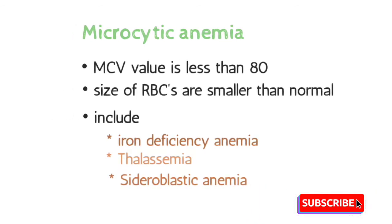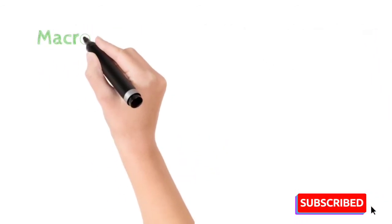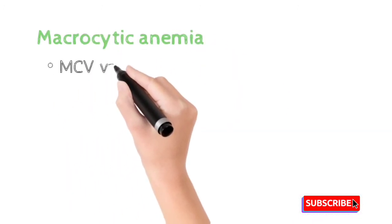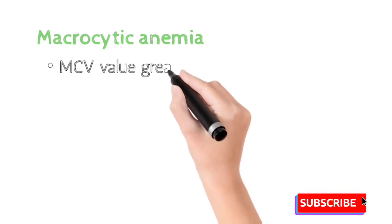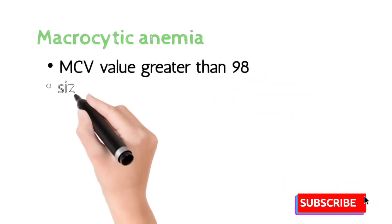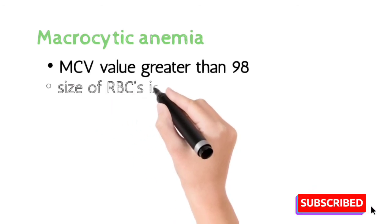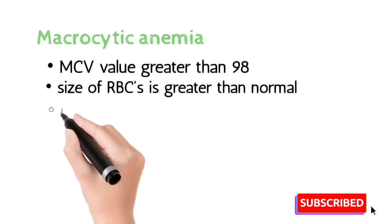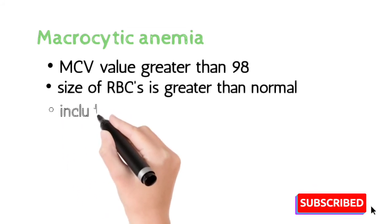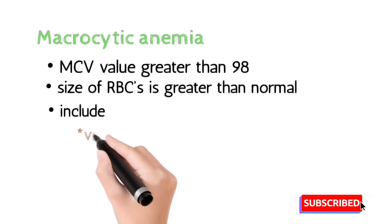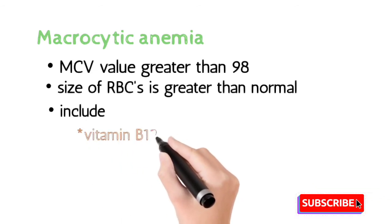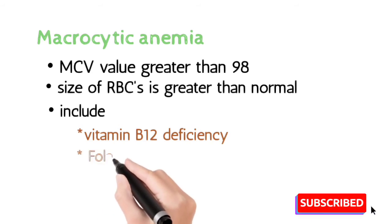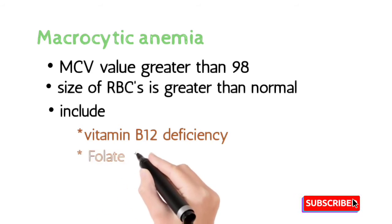Macrocytic anemia is the condition during which the size of RBCs is larger than normal and the MCV value is greater than 98. This includes the megaloblastic type. Conditions included are vitamin B12 deficiency anemia — that is, pernicious anemia — and folic acid deficiency anemia, during which the size of RBCs is also greater than normal.